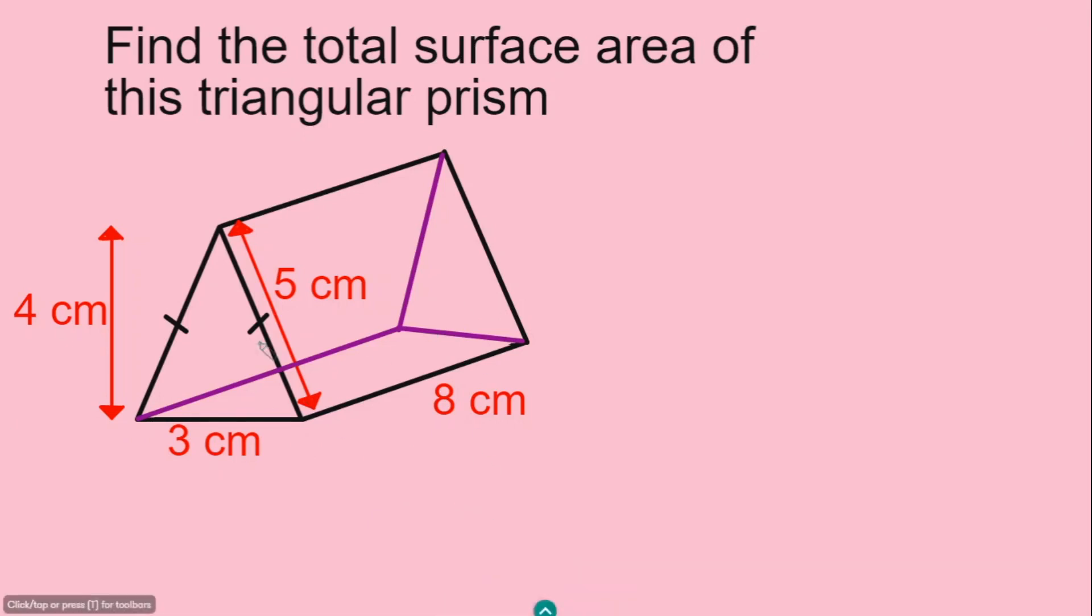So we'll begin with the first face, which is the triangle here. Remember, the area of a triangle is given by the base times the height divided by 2.